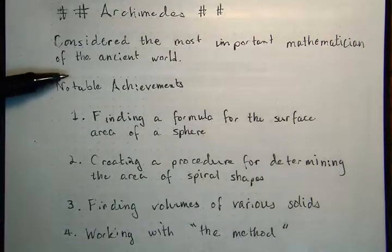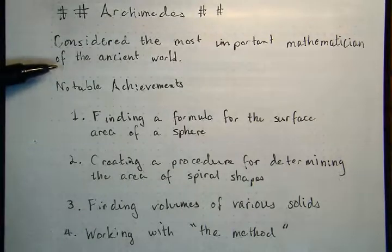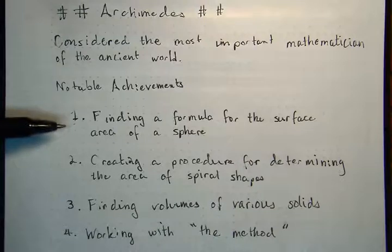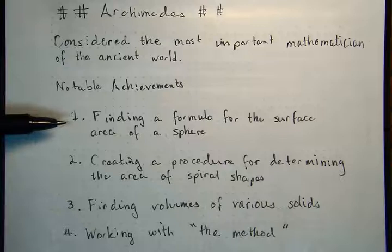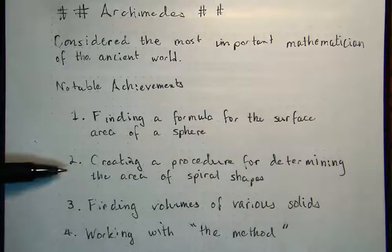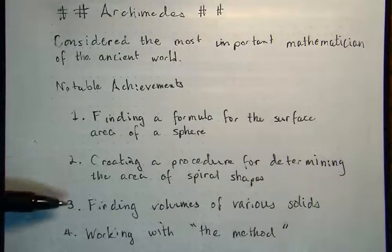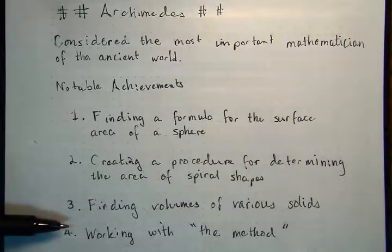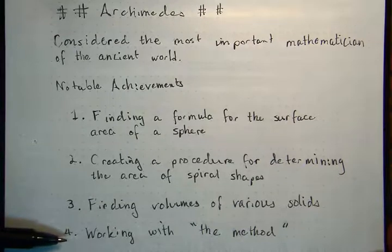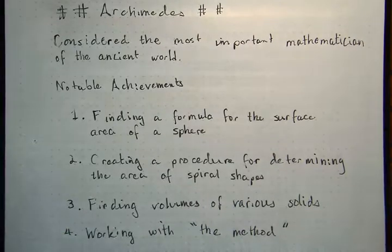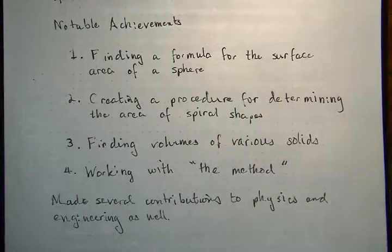Archimedes is generally considered the most important mathematician of antiquity, and several notable mathematical achievements include finding the formula for the surface area of a sphere, creating a procedure that would find the area of spiral shapes, finding volumes of various solids, and working with something called the method, in particular, sometimes called the method of exhaustion. Archimedes made several contributions to physics and engineering as well as mathematics.